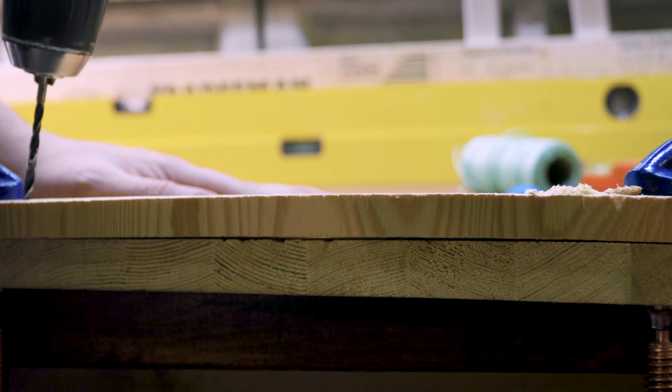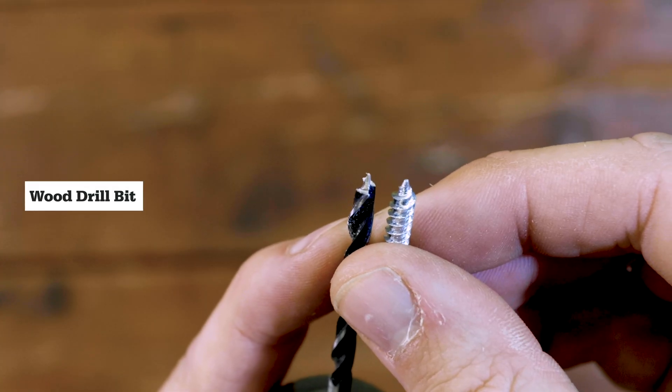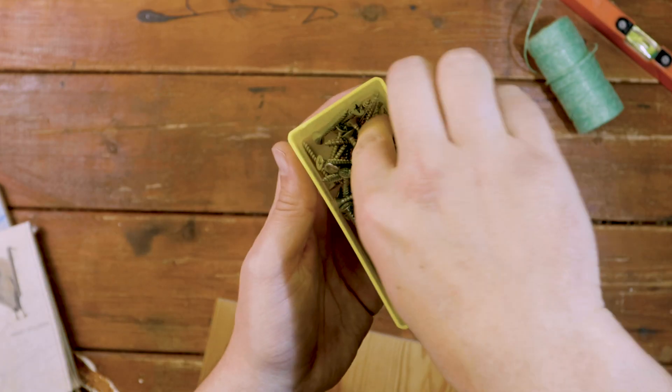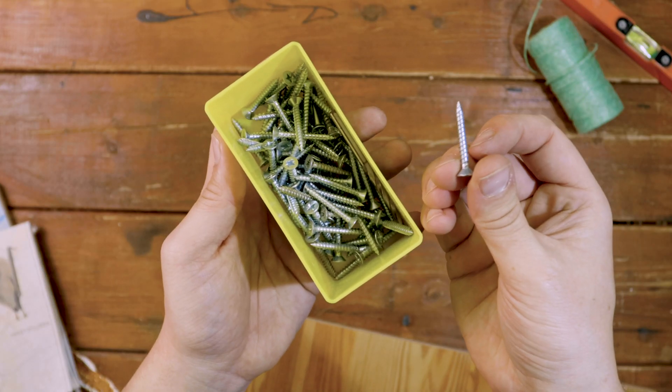Use an electric drill to pre-drill. We've chosen this appropriate drill bit. We're using 30 millimetre countersunk screws.